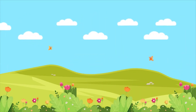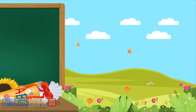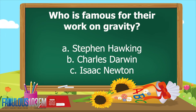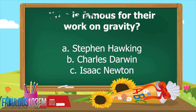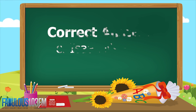Let's see how well you did. The first one I asked you was: who's famous for their work on gravity? Was it A) Stephen Hawking, B) Charles Darwin, or C) Isaac Newton? Shout your answer at the radio as loud as you can so I can hear you — and the correct answer is C, Isaac Newton.